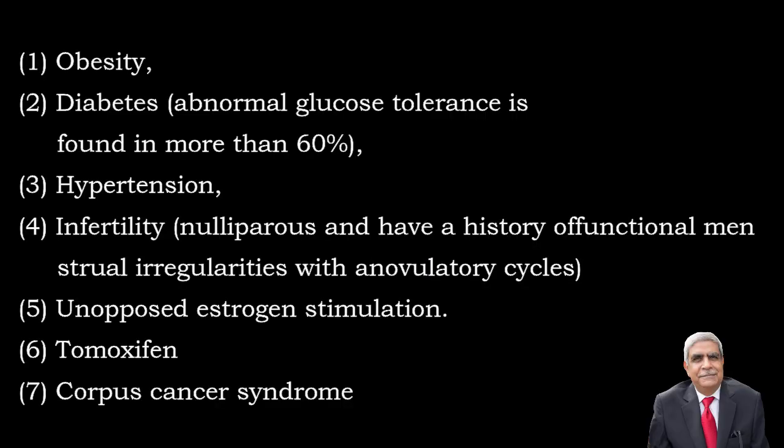Now I'm going to discuss part two of the endometrial carcinoma. In the first part we saw that the most common factor responsible for endometrial carcinoma is unopposed estrogen stimulation. Tamoxifen is the drug which suppresses the estrogen receptors in the breast, whereas the estrogen receptors in the endometrium are exposed and they respond to estrogen.